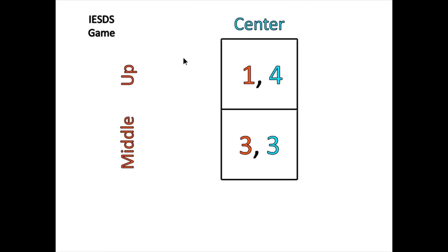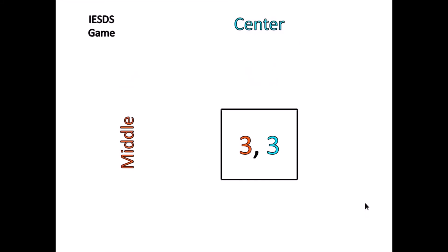That means this is just a simple optimization problem for player 1, where he is left choosing between middle or up. Since 3 is greater than 1, he's going to play middle and not up. That leaves us with a solution of middle and center, and they're going to get 3 points apiece in this game.